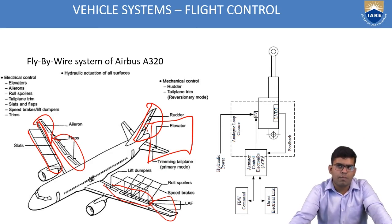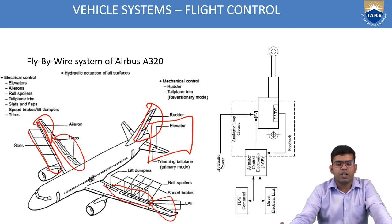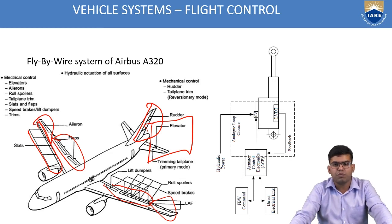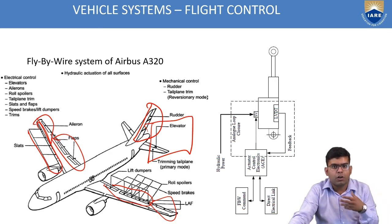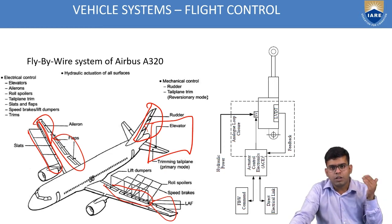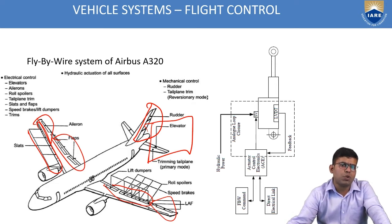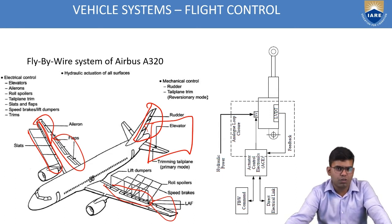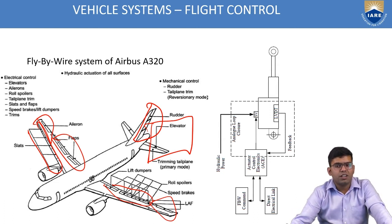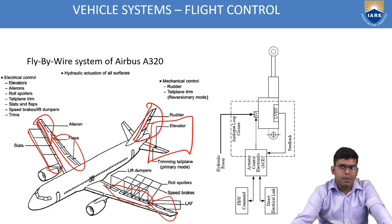I will not go into depth about all the different variations of flight control activation methods, as that is a topic in itself. I will briefly cover the type of control method used in commercial and modern aviation today. Modern aircraft such as the Boeing 777 and Airbus A320neo, since the dawn of the 1990s, have used a new control system known as fly-by-wire. Fly-by-wire has three different modes: fly-by-wire, direct electrical link, and mechanical reversion control.